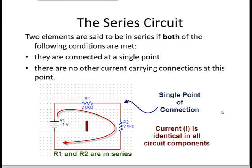Let's look at the definition of a series circuit. Two elements are said to be in series if both of the following conditions are met: they are connected at a single point — such as R1 connected at a single point on the left and a single point on the right — and there are no other current carrying connections at this point. So there is only one source of current through R1 and only one source of current through R2.